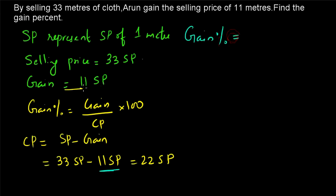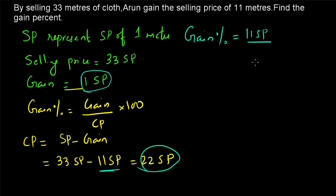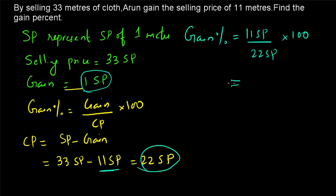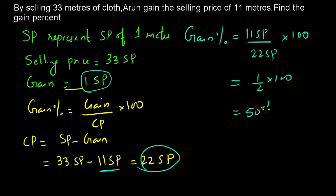So what is the gain percentage? Gain percentage equals 11 SP divided by 22 SP, which is 1/2 into 100, equal to 50 percentage.